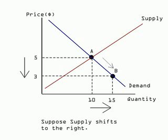Suppose the supply curve shifts to the right. Perhaps more firms enter this market. The increase in the number of firms drives down the price.